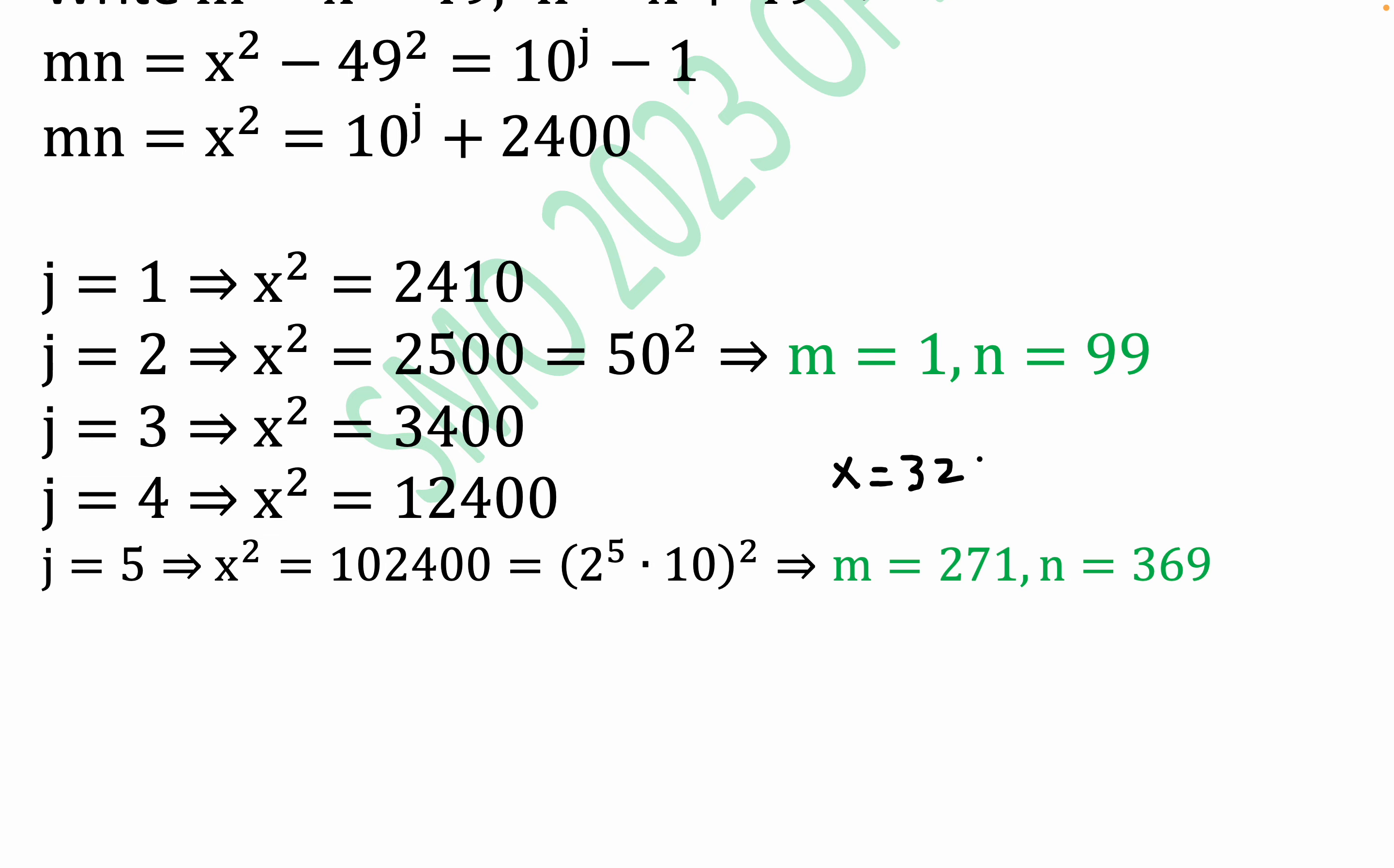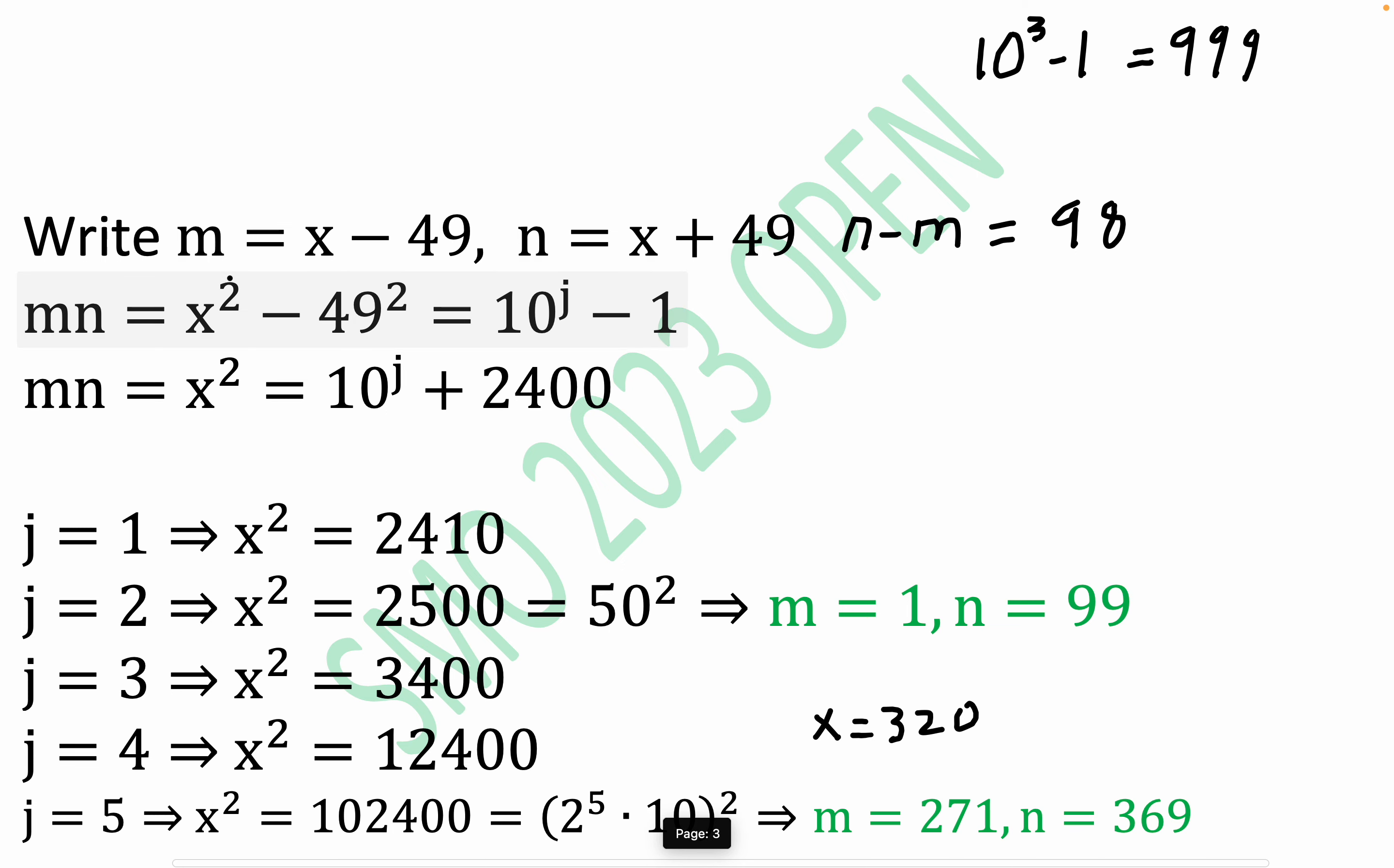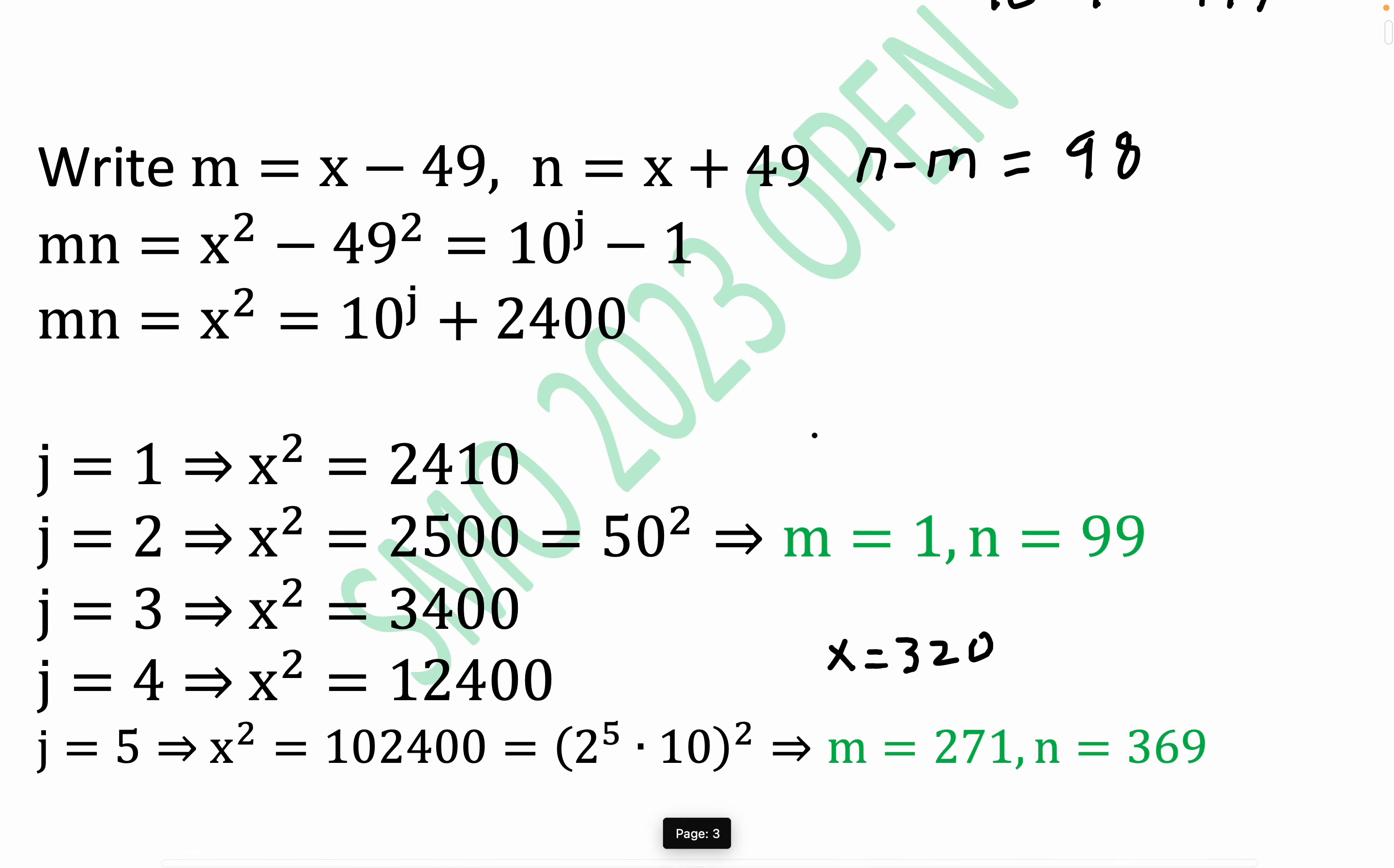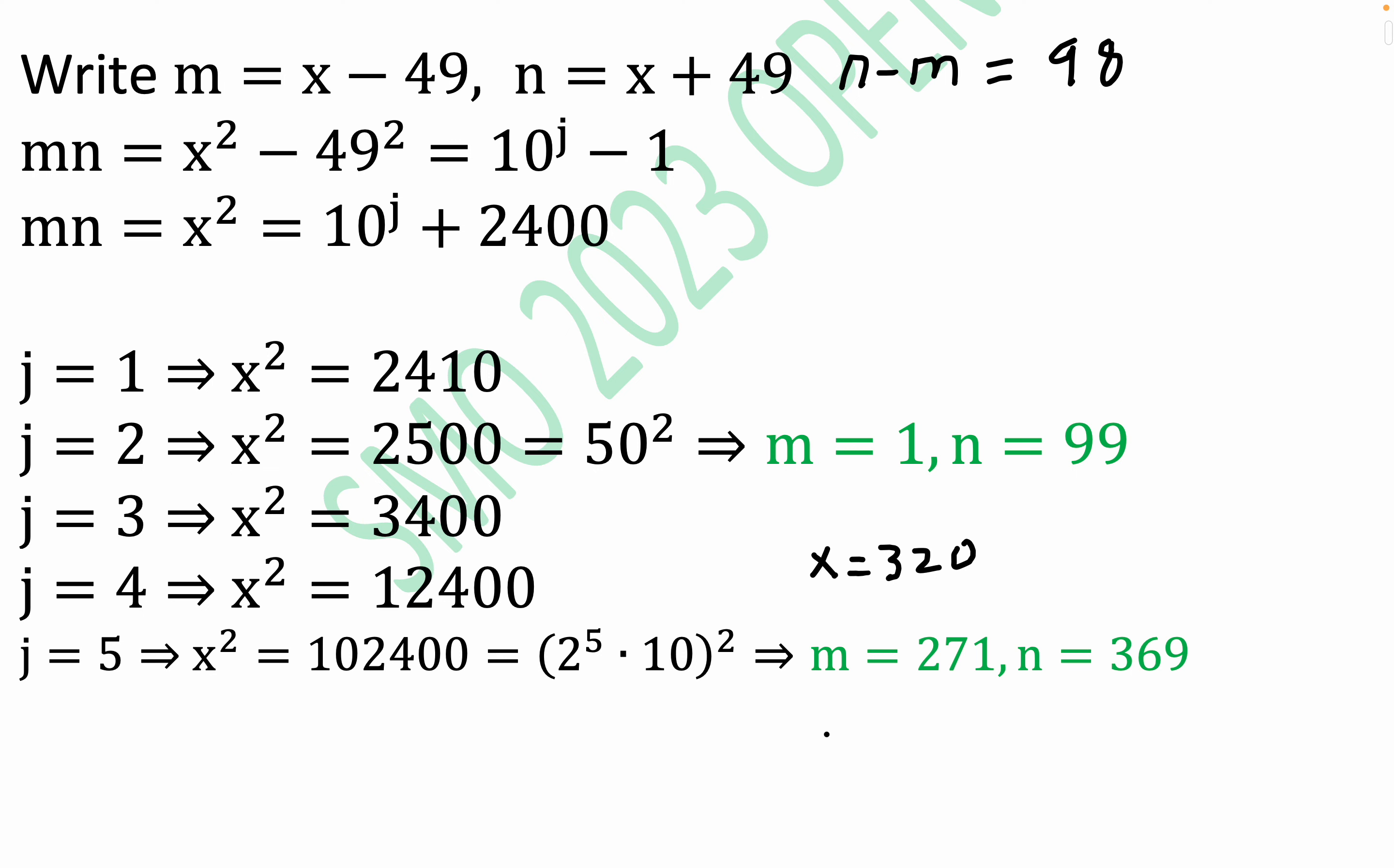And so m, m is the way we set up, m is x minus 49. We chose arbitrarily m to be x minus 49 and n to be the larger number. So what we'll do right here, am I going to keep it on the screen? Yeah, sure.